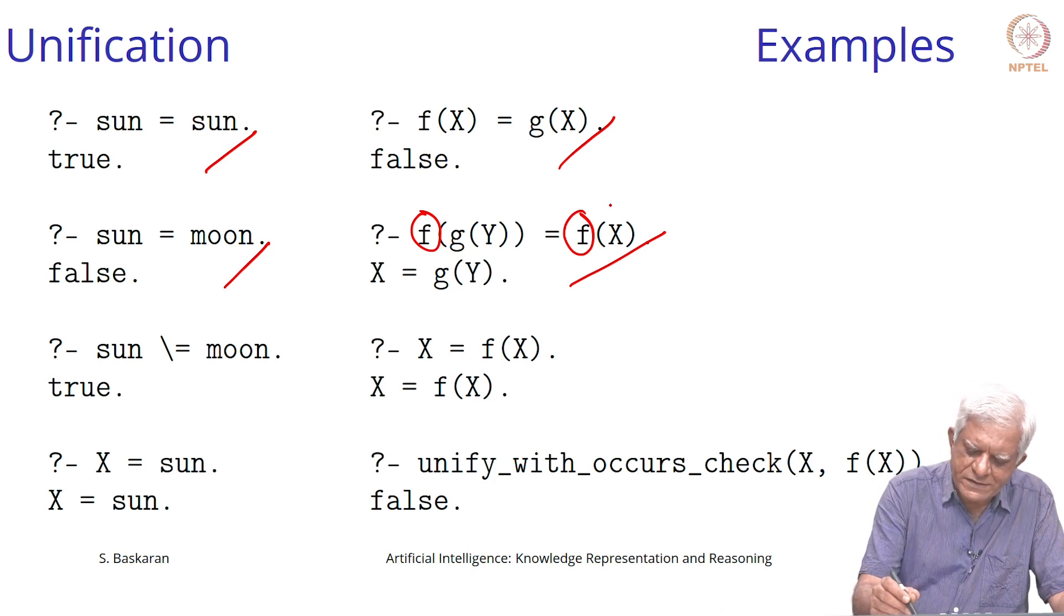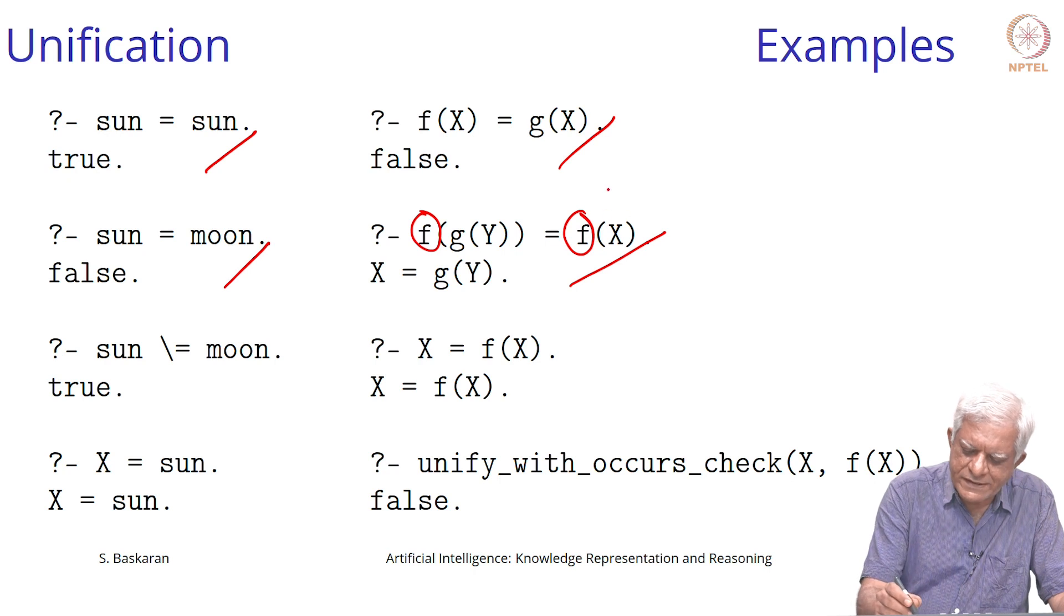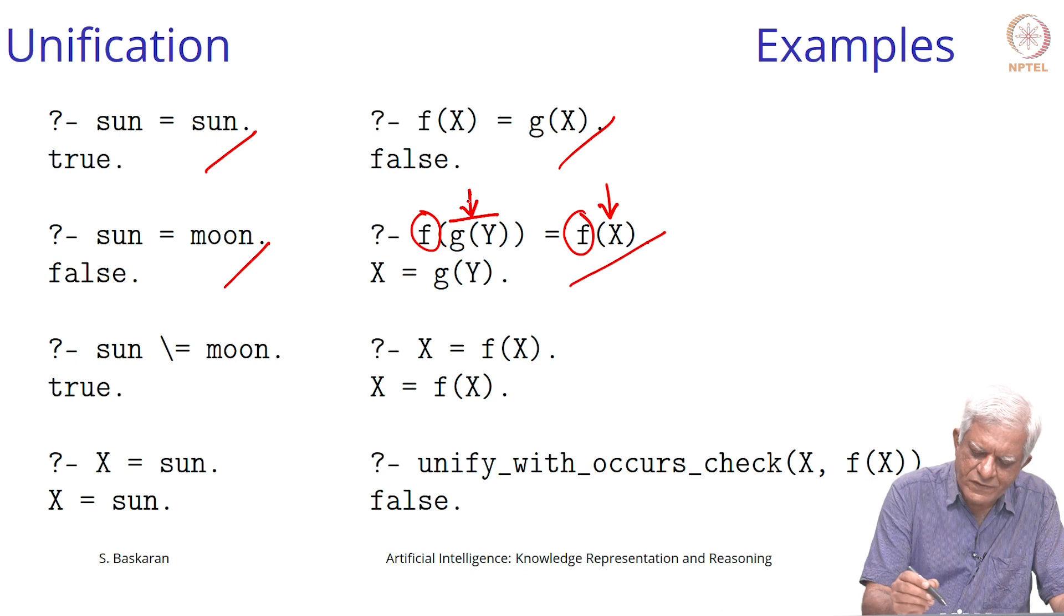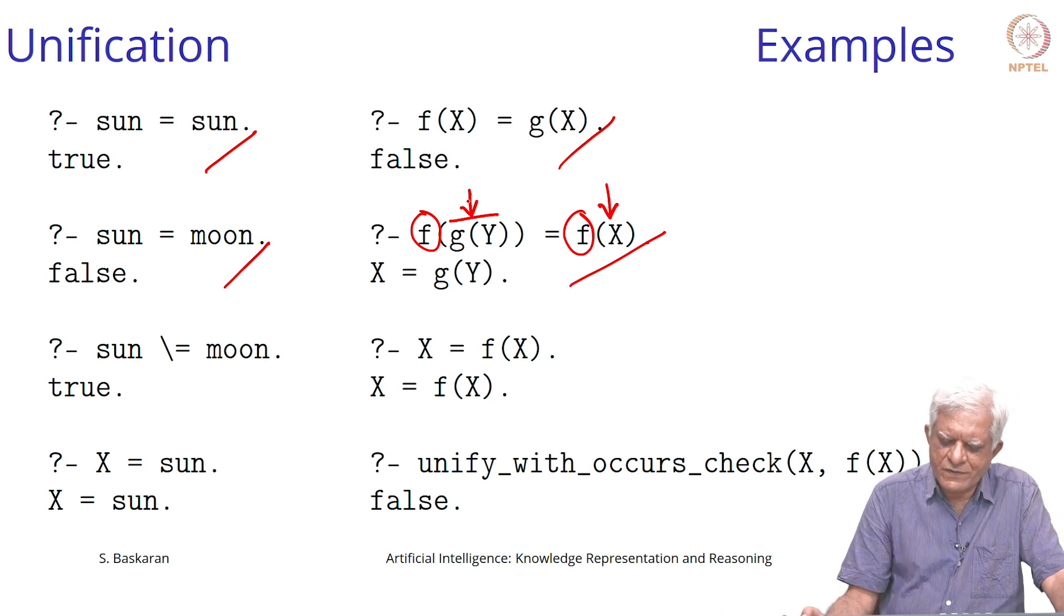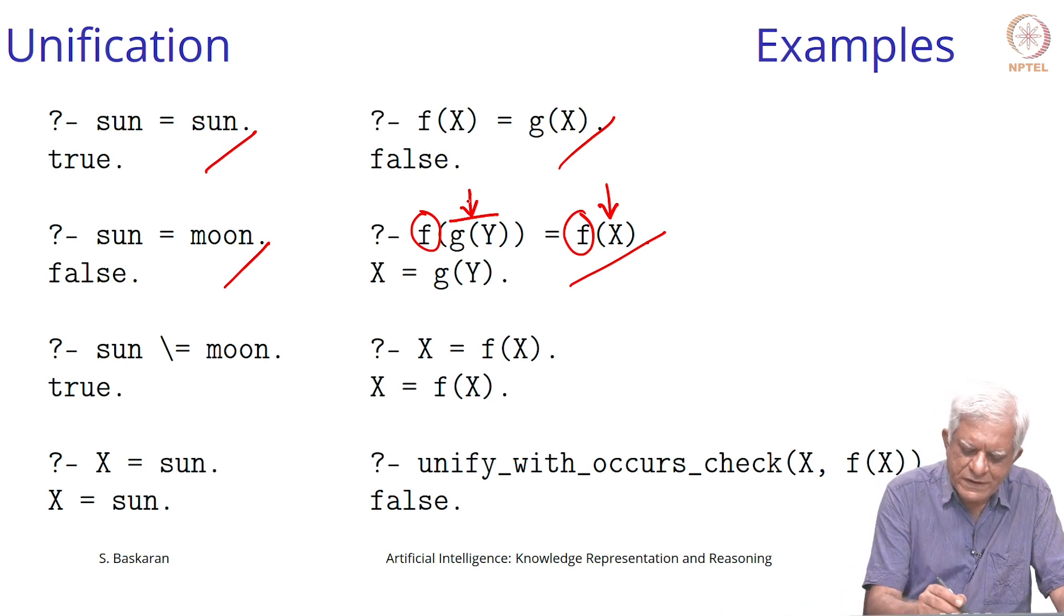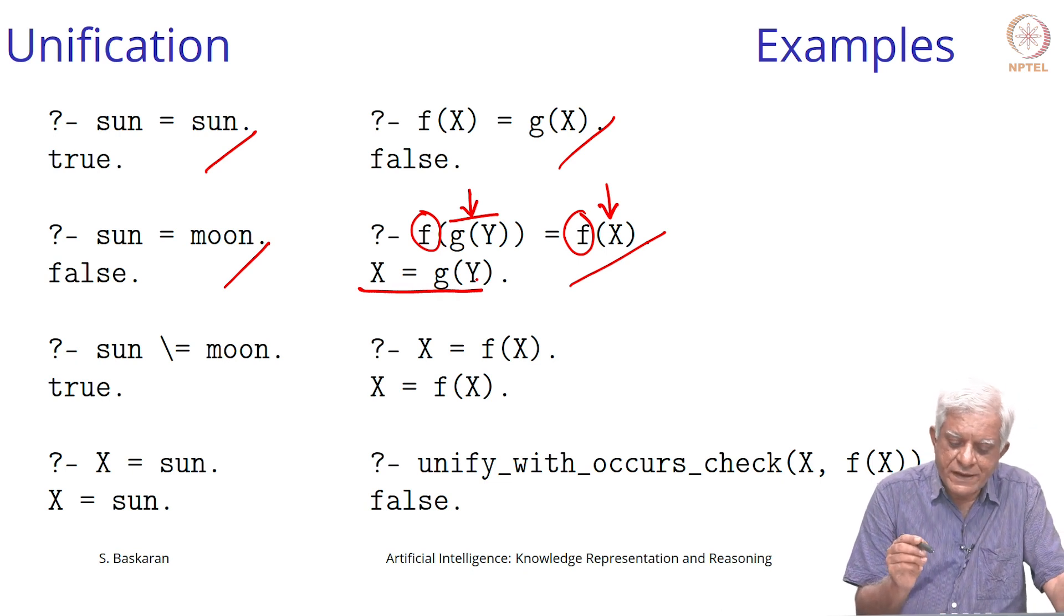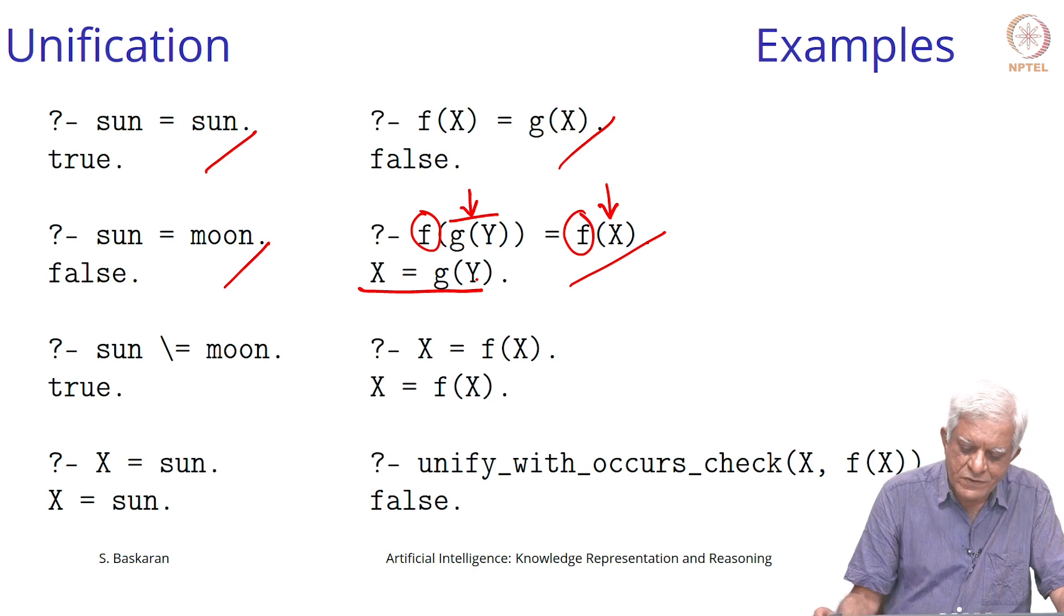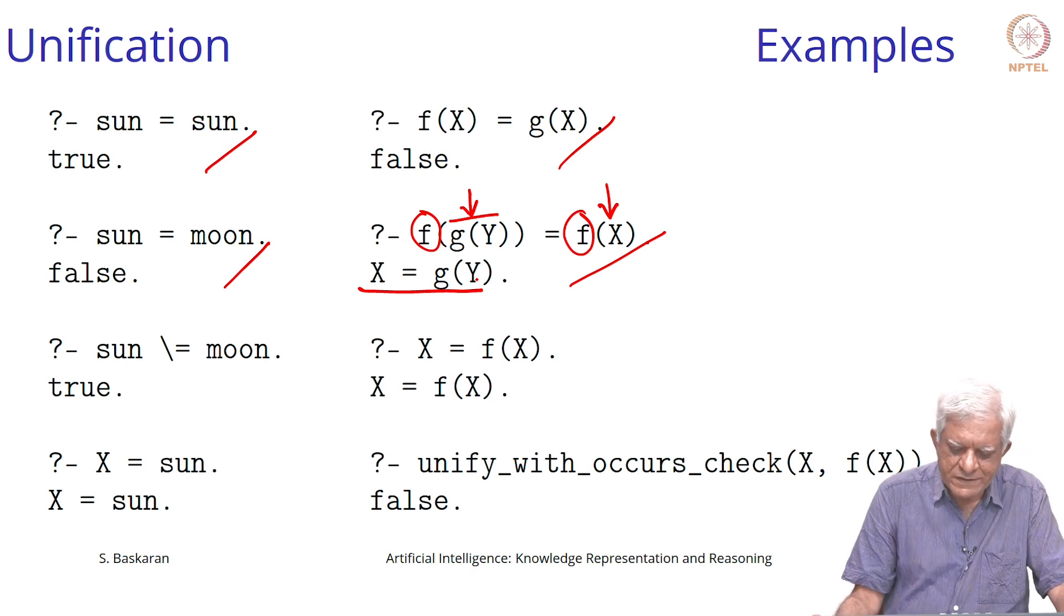In this case, the argument to the right hand side is x and the argument to the left hand side is g of y. There is nothing which stops you from saying that x equal to g of y, and unification succeeds. It also tells you what is the substitution that you are using for which variable.